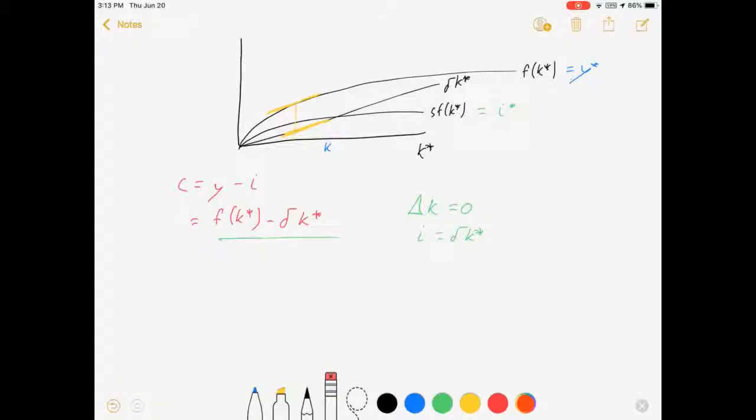So we are interested in this point marked in yellow where those two things are equal to each other. And so we want to find the capital level at which the slopes are equal and that will be our golden rule level of capital.